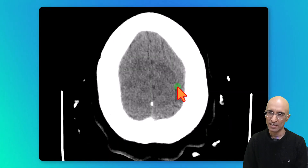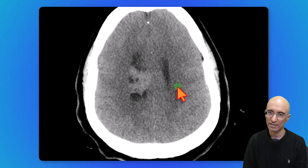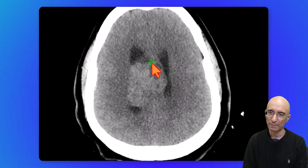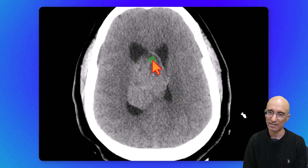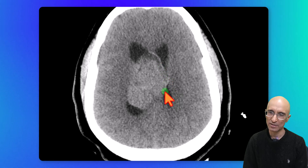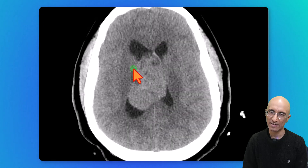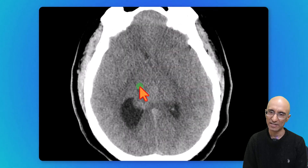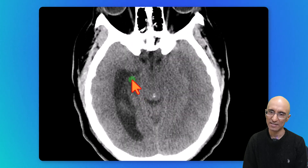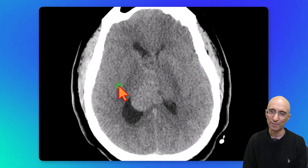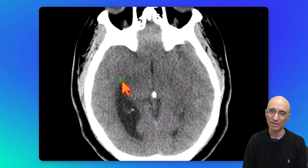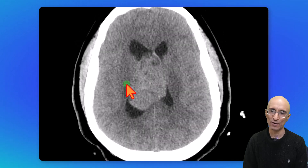On the CT head, as I scroll down, we can see a hyperdense mass within the right lateral ventricle. The lesion appears to be attached to the septum pellucidum and extends to the lateral wall of the right lateral ventricle. The right lateral ventricle is asymmetrically distended with mild periventricular hypodensity, concerning for obstructive hydrocephalus with transependymal CSF flow.